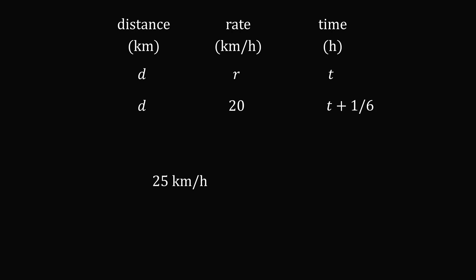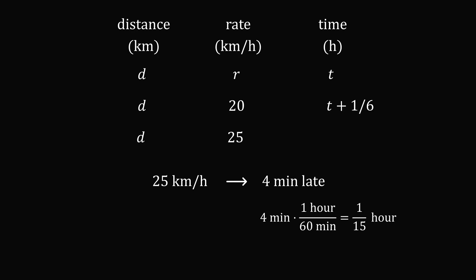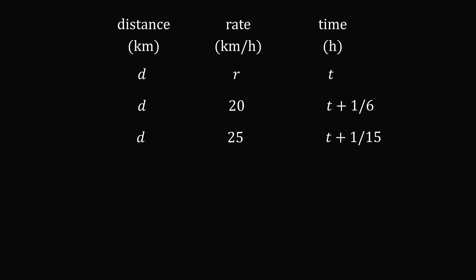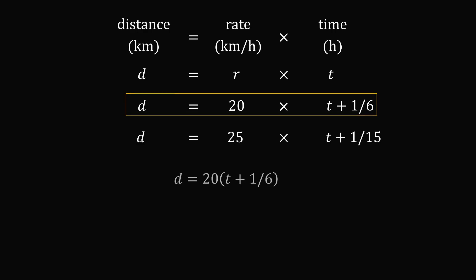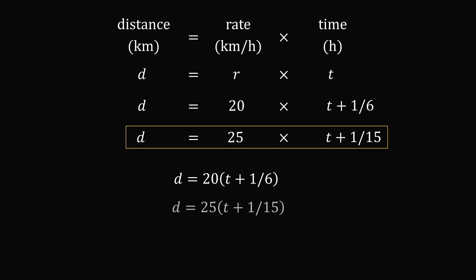We are also given that if he goes at 25 kilometers per hour, he ends up 4 minutes late. The distance is still d, the rate is 25. Converting 4 minutes: 4 multiplied by 1/60 simplifies to 1/15 of an hour. Since he ends up late, the time taken is t + 1/15. Applying d = rt, we get the equation d = 20 × (t + 1/6), and d = 25 × (t + 1/15).